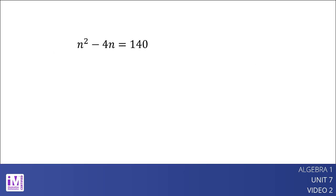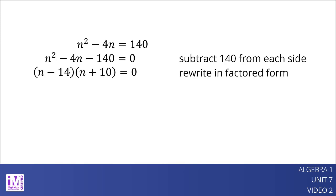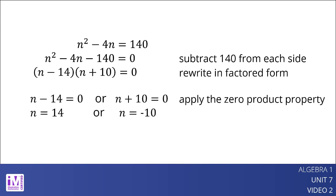n squared minus 4n equals 140. Subtract 140 from each side so the right side is 0. Rewrite in factored form. Apply the zero product property. The solutions to the equation are n equals 14 and n equals negative 10.